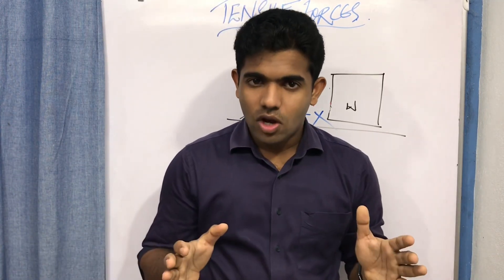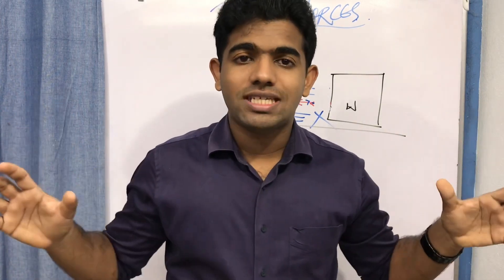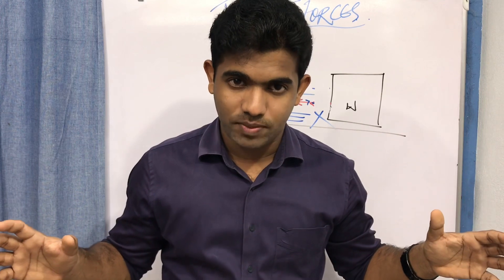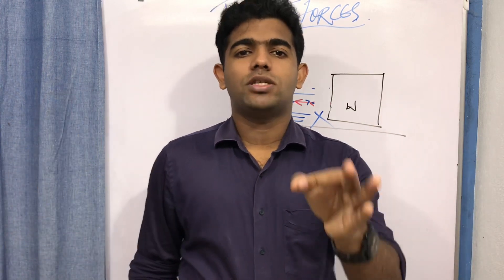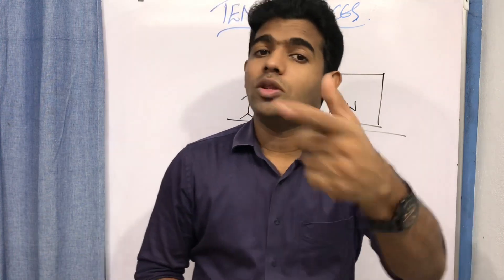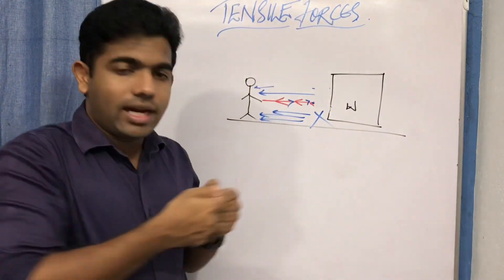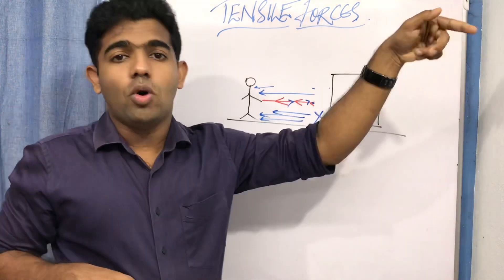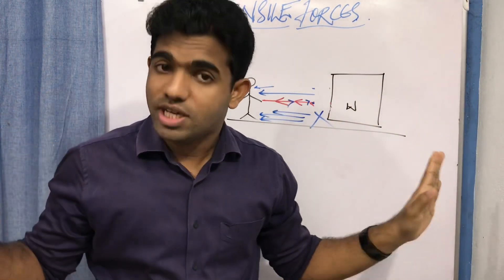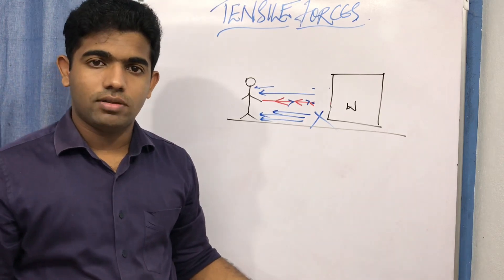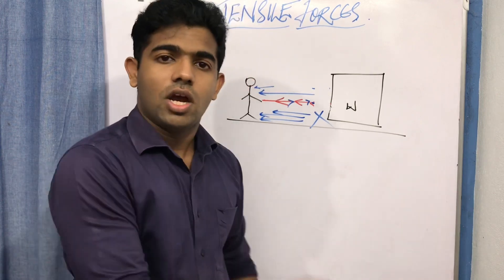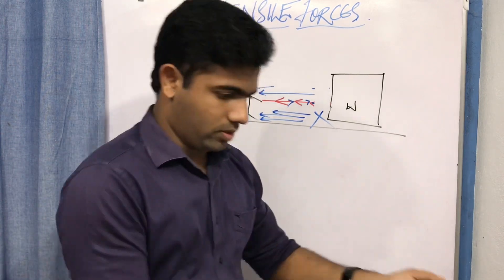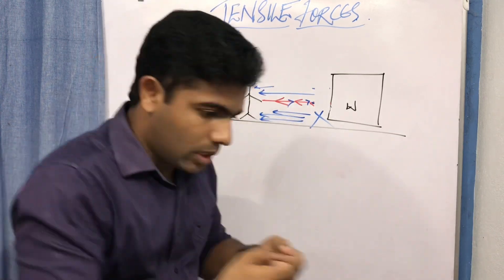The definition is: tensile force exists when there is an opposite pull on the same object. If you miss the key word 'opposite,' your answer is wrong — because when I am pulling and there is no opposite pull from that direction, absolutely no tension exists. For example, if a rope is lying on the ground and you pull it, no matter how much force you apply, it will come to you because there is no opposite pull.